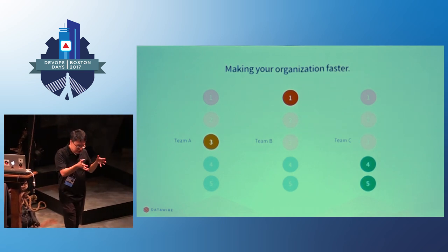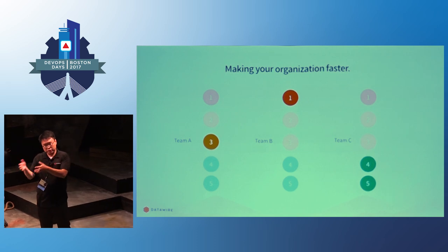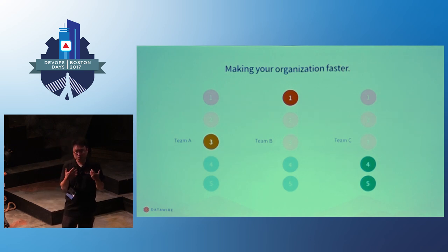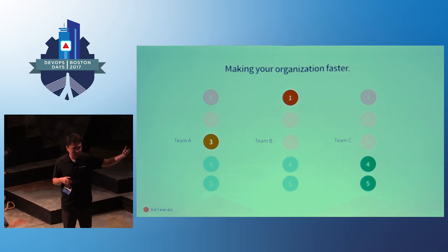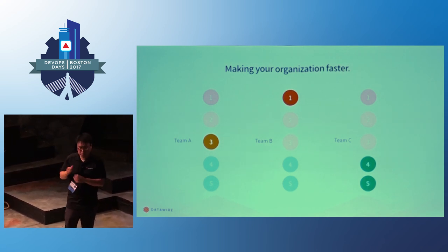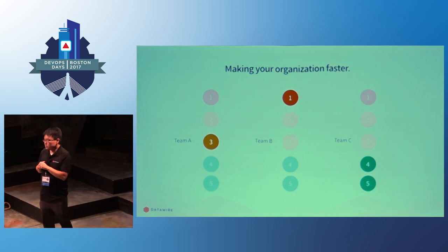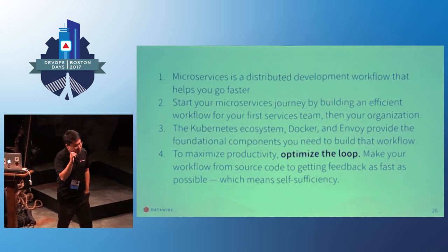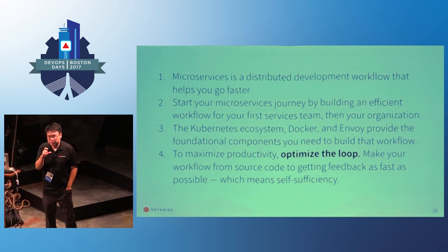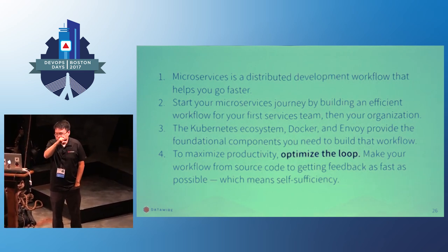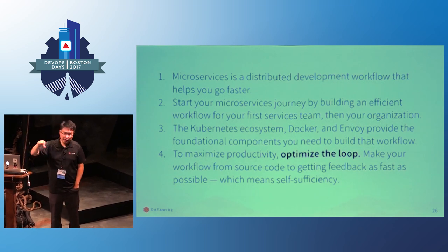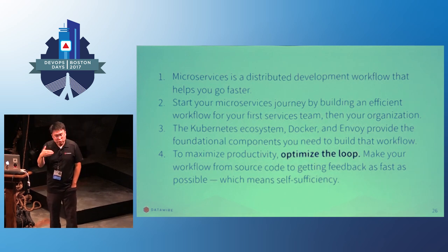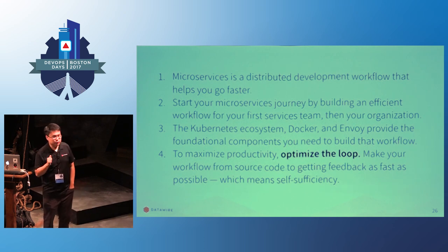Once a single team has adopted this, you want other teams to adopt it too. The key is supporting a model where teams can be at different points in their development process simultaneously — one team might be prototyping while another is running in production. To maximize productivity, optimize that loop from source code to getting feedback, whether from end users or seeing if your code runs. Optimize that by making people as self-sufficient as possible.